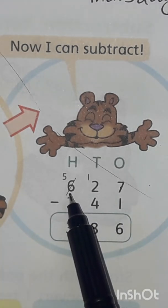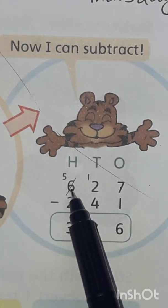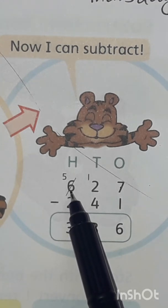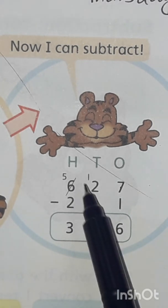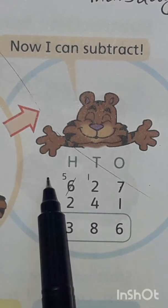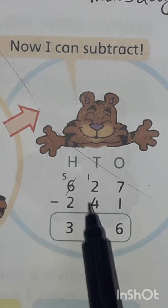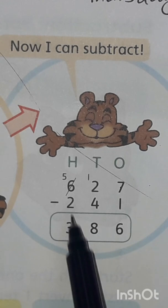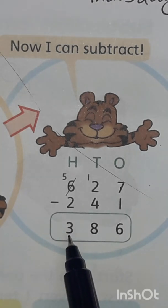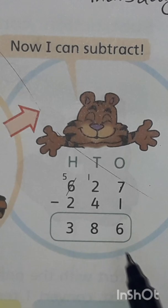We took the borrow from number 6. Write the back number of 6 — count back: 10, 9, 8, 7, 6, 5. Drop 5 lines here. Cut 2 lines. The answer is 3. The answer is 386.